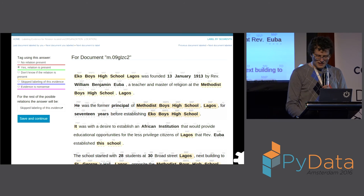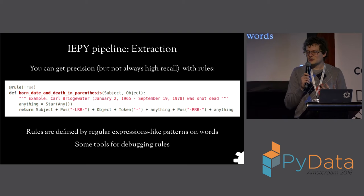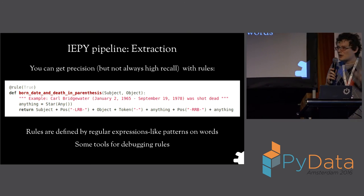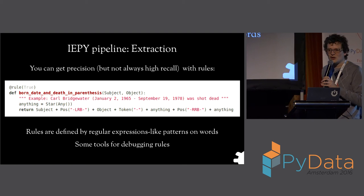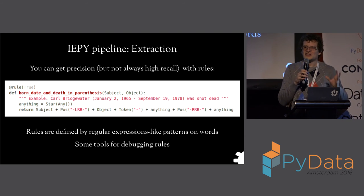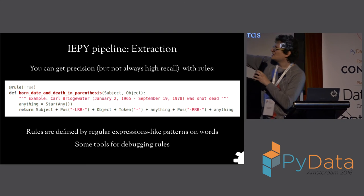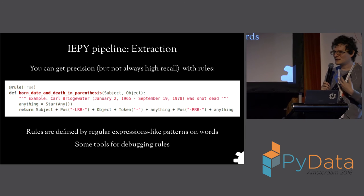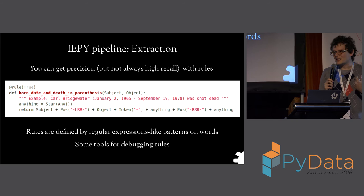Something that works well and needs less human work is rule-based extraction. Rules are simple to write yet quite effective — for example, if you're identifying birthdates and you see a name followed by two dates between parentheses, it's probably a birth date and a death date. We have a meta-language like regular expressions but on words rather than individual characters. You can also add rules for negative examples of your relation, and the API provides tools for testing and debugging your rules. The examples extracted from rules are typically good, but rules are not very robust — a slight change in input and the rule will not find it.